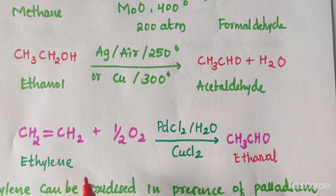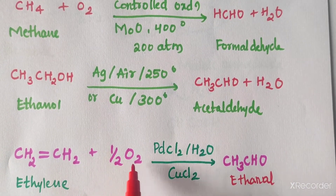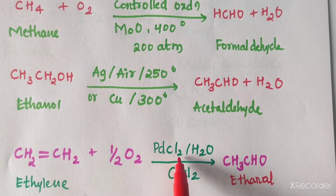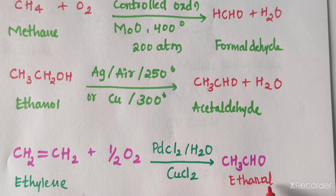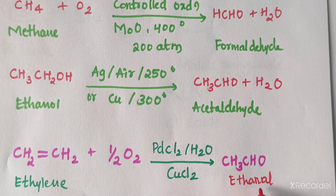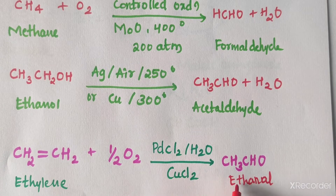Ethylene can be oxidized with oxygen in the presence of palladium chloride (PdCl₂) and copper chloride (CuCl), which gives acetaldehyde. This process is known as Wacker's process. This is a very important process because in the previous NET exam this question has been asked.